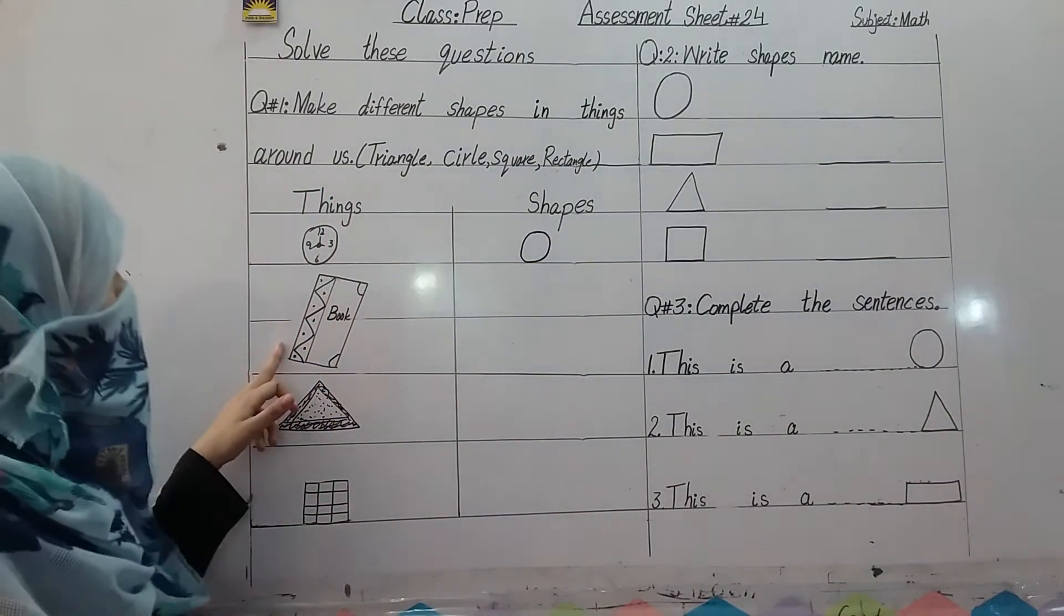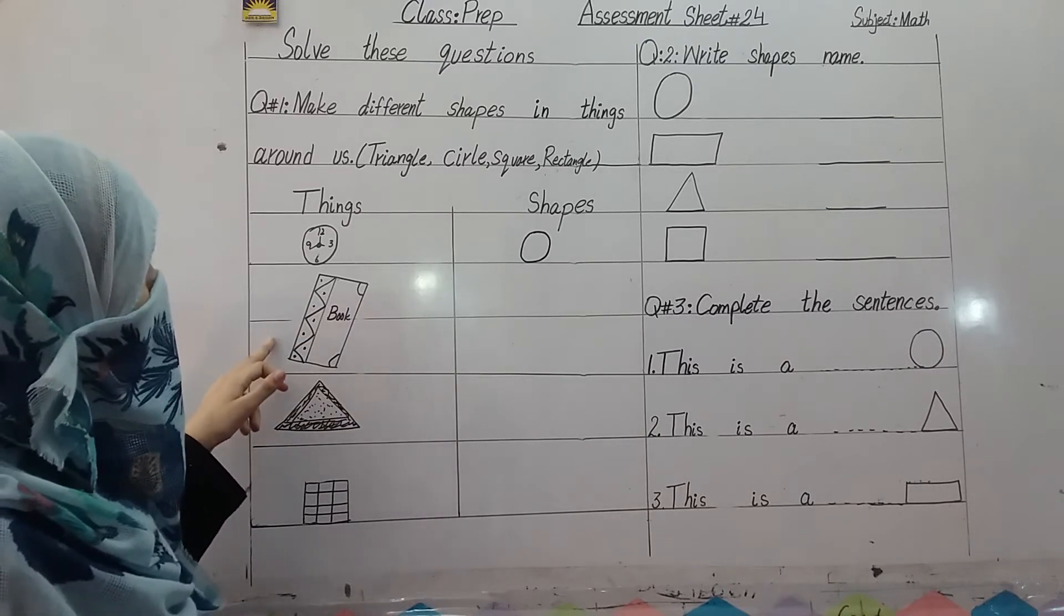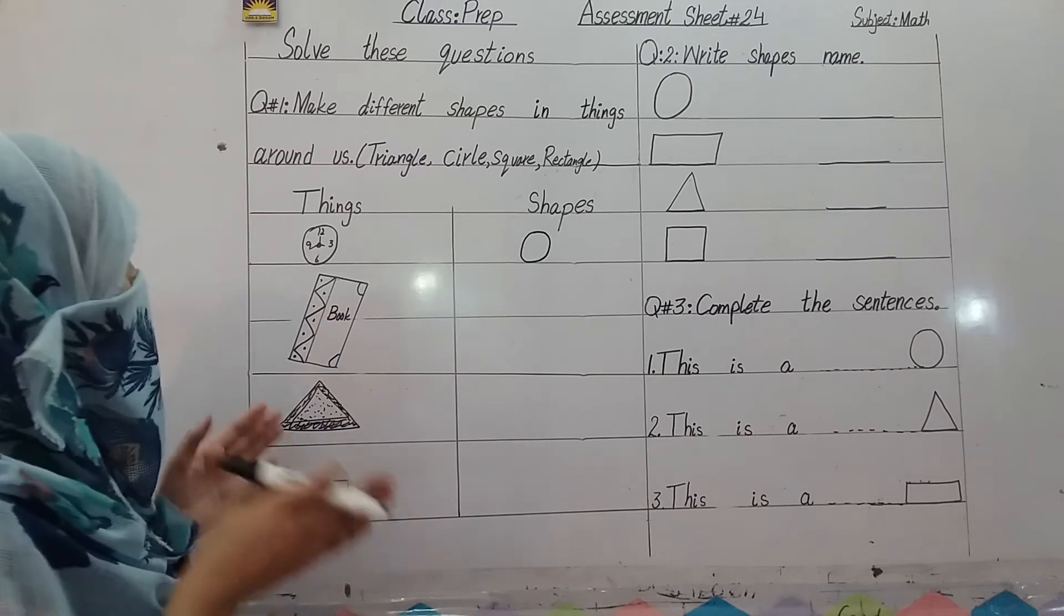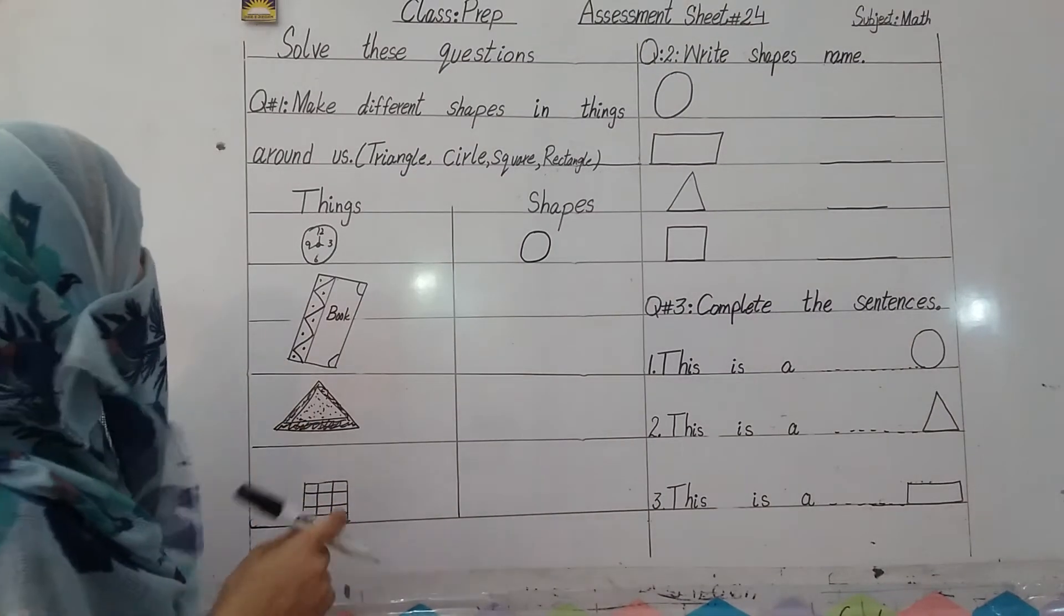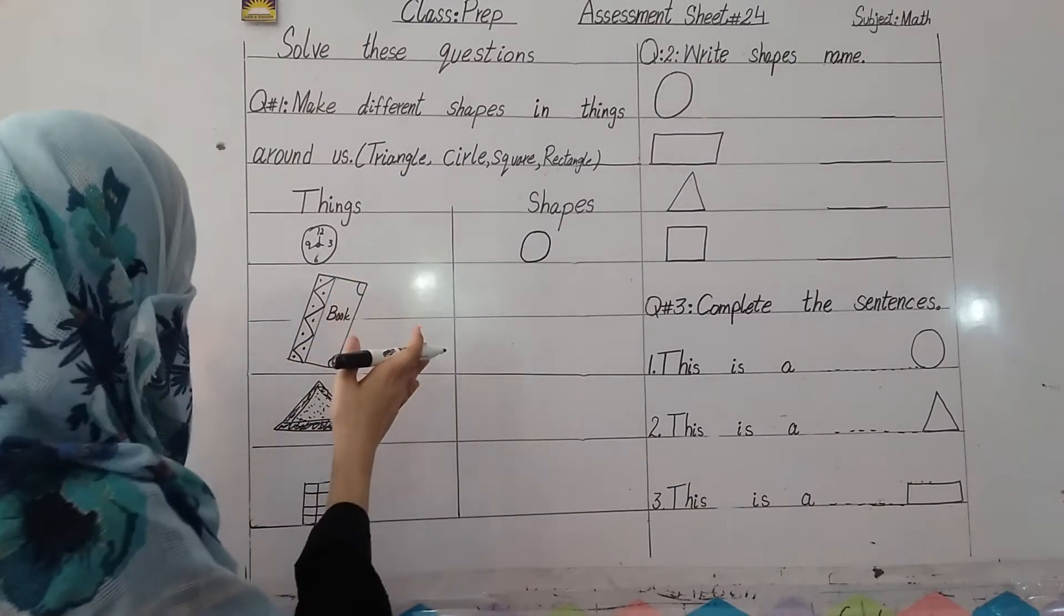Next, see this book, what shape you are looking like, circle or square or rectangle? So look at this square, it is a box type, so this is a rectangle. So you will see the shape of the rectangle.